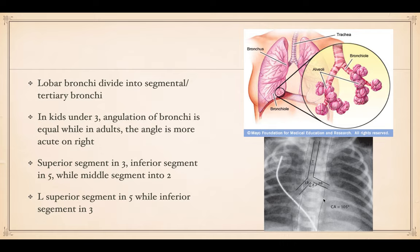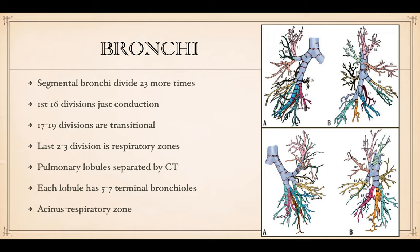There are segments in each lobe. Usually the superior segment of the bronchi will have three, while the inferior will have about five, and the middle branches into two segments. On the left, there is only the superior and inferior segments, of course, because there is no middle lobe. The segmental branches divide many more times. The first 16 divisions are just conduction — there's no gas exchange. The 17th through 19th divisions are transitional, with some exchange. The last two to three divisions are the true respiratory zone.